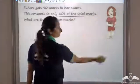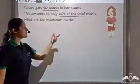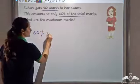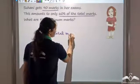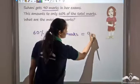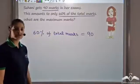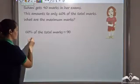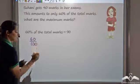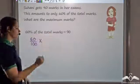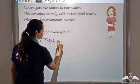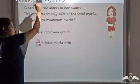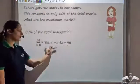We know she scored 60 percent of the total marks, and we also know she scored 90 marks. So 60 percent of total marks equals 90. What is 60 percent? It is 60 per 100, that is 60 by 100, multiplied by the total marks — which we wish to find. So the equation is: 60 by 100 of total marks equals 90.